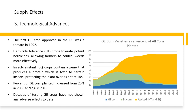Herbicide-tolerant (HT) crops are able to tolerate potent herbicides, allowing farmers to control weeds more effectively. Insect-resistant, or BT crops, contain a gene that produces a protein toxic to certain insects, protecting the plant over its entire life. The figure illustrates adoption of corn seeds with HT, BT, or stacked (both HT and BT) traits in the U.S. over the last 20 years. The percent of GE corn planted increased from 25 percent in 2000 to 92 percent in 2019. The main controversy surrounding GE crops is their effect on the environment and animal and human health; however, decades of testing have not shown any adverse effects to date.